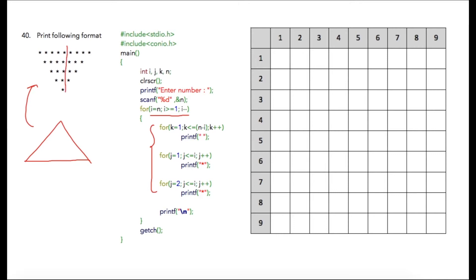I am breaking this pattern into three types as done previously. These will be used for my spaces, so I'll be using the k variable here. This part will be for j iterations. If the user has entered 5, the number of iterations will be 5, but we are starting from 5 and going till 1.